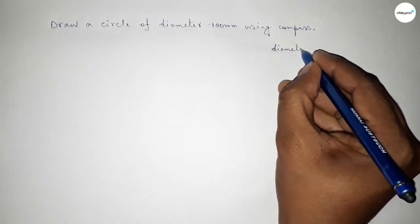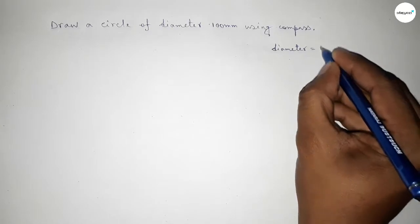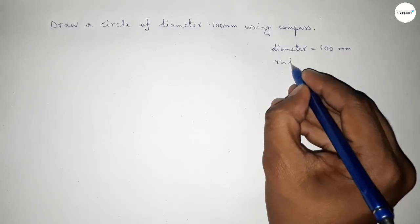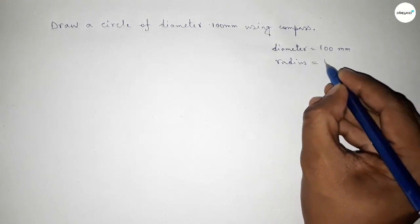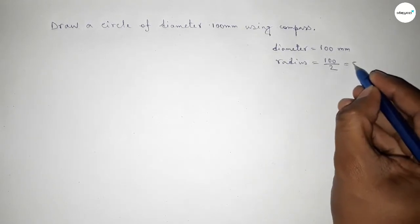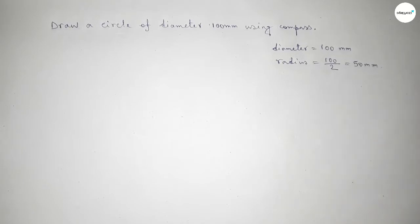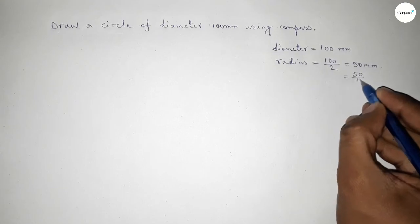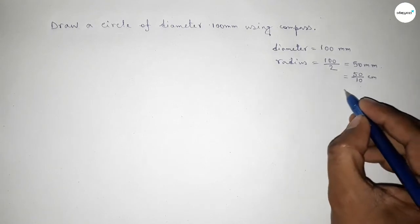Diameter equals 100 millimeter. Now finding the radius, divide it by 2, so 100 divided by 2 equals 50 millimeter. Next, converting millimeter into centimeter by dividing by 10, so this is 5 centimeter.